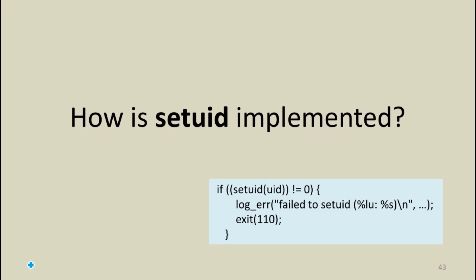It would mean one of two things: either we're running the kernel but without the privileges the kernel has, or it would mean we have a way as a user to directly change to get kernel privileges — to change into supervisor mode. So getting into the kernel is a lot trickier than that. We're not going to be able to do it with just a regular function call.